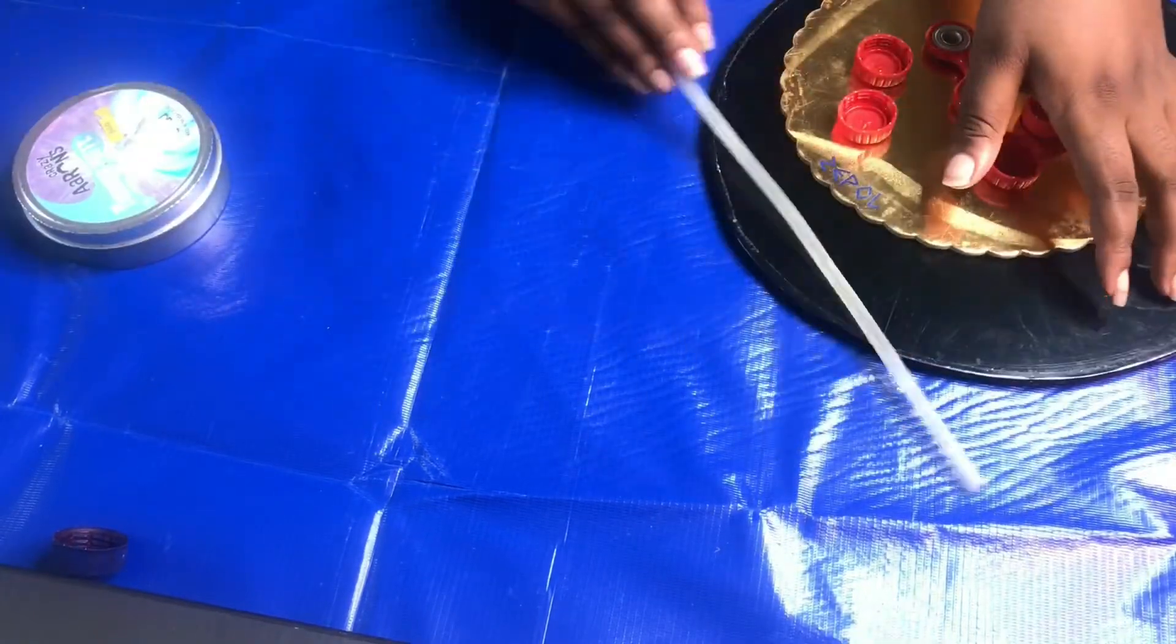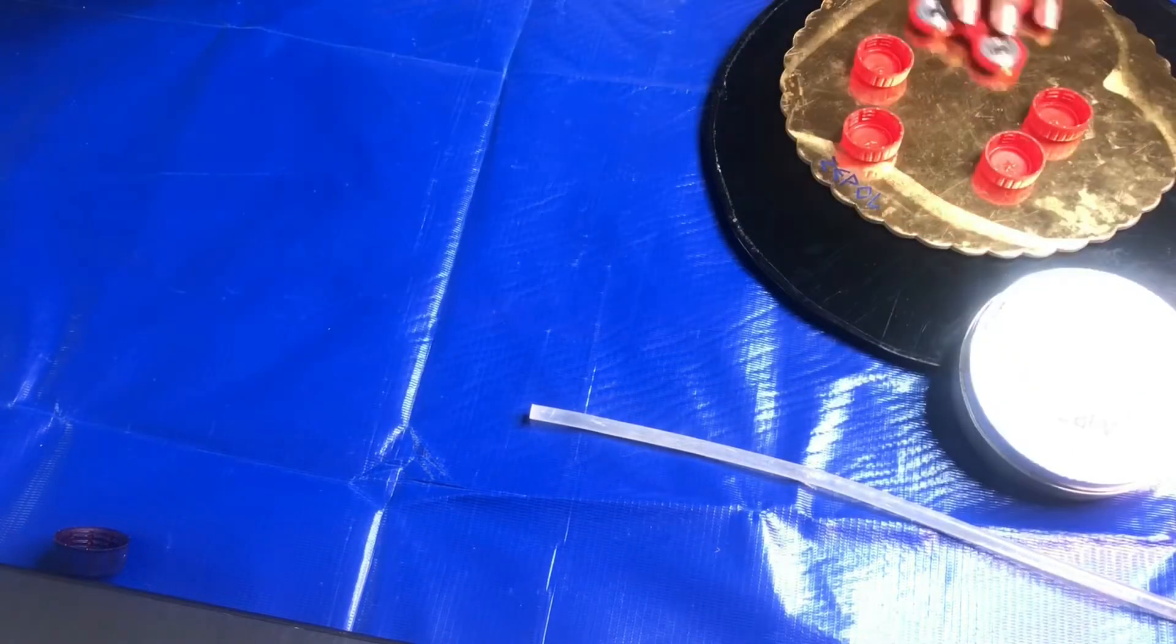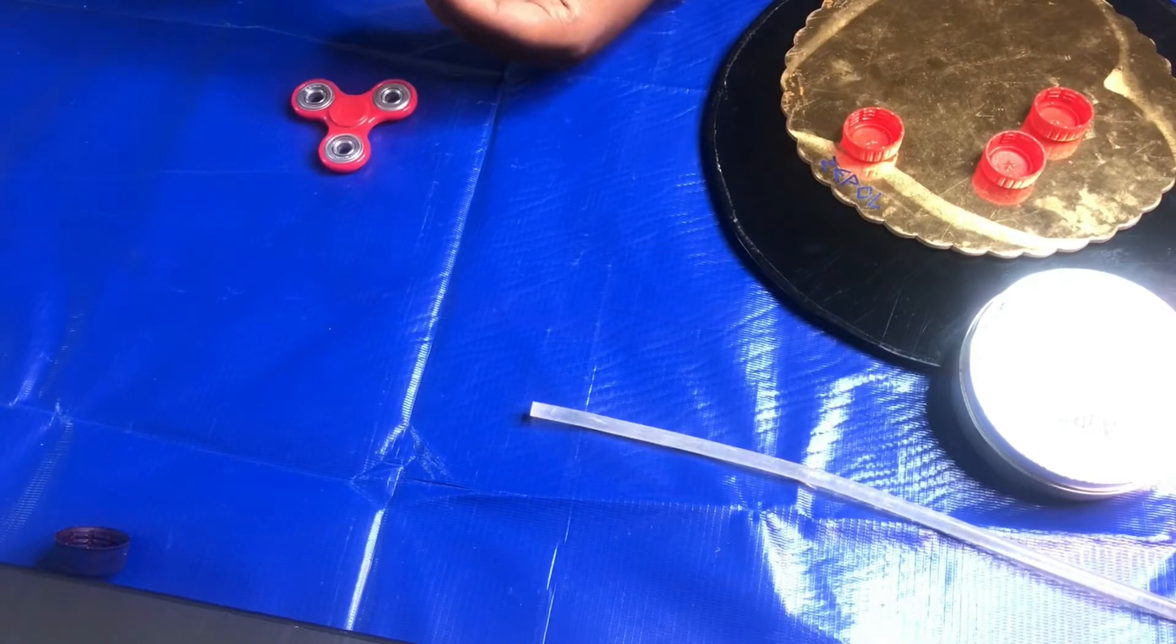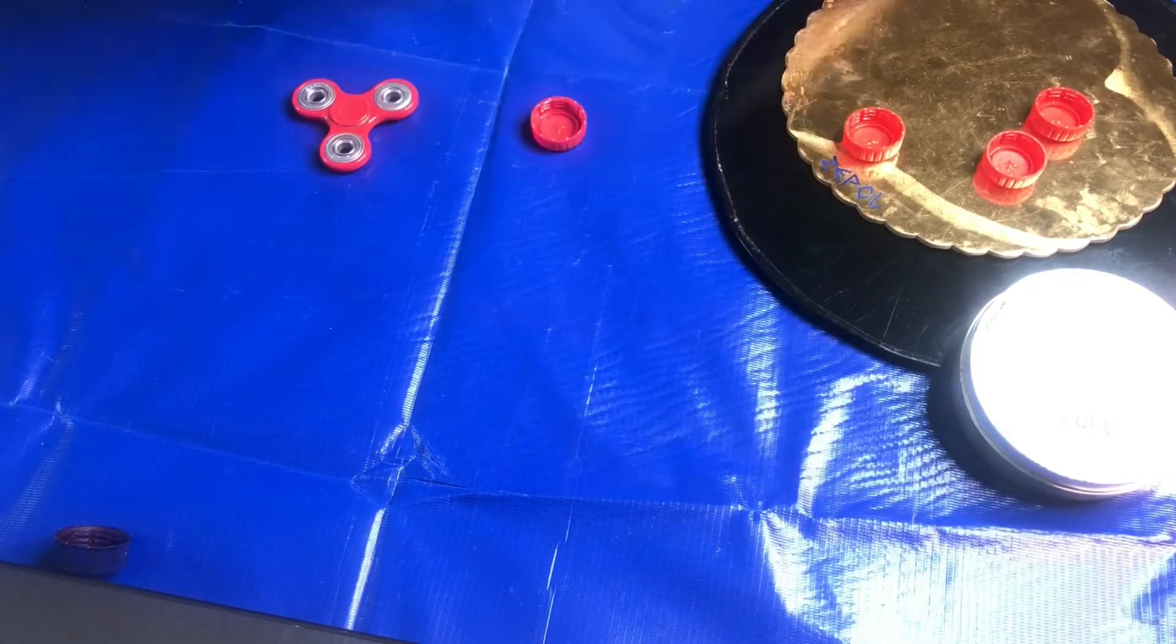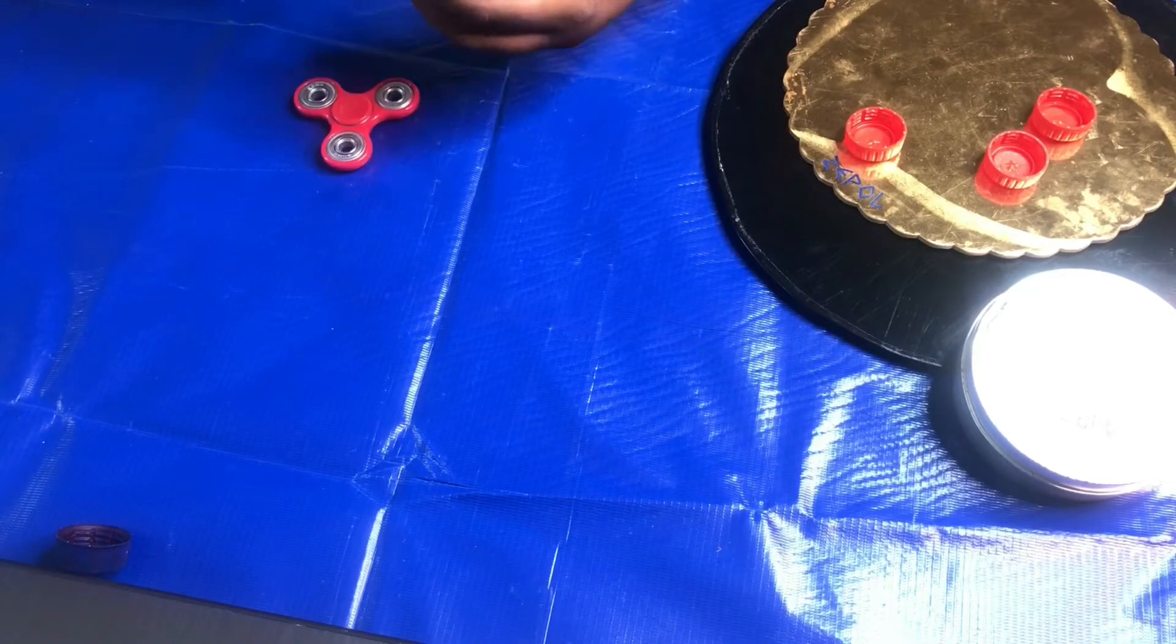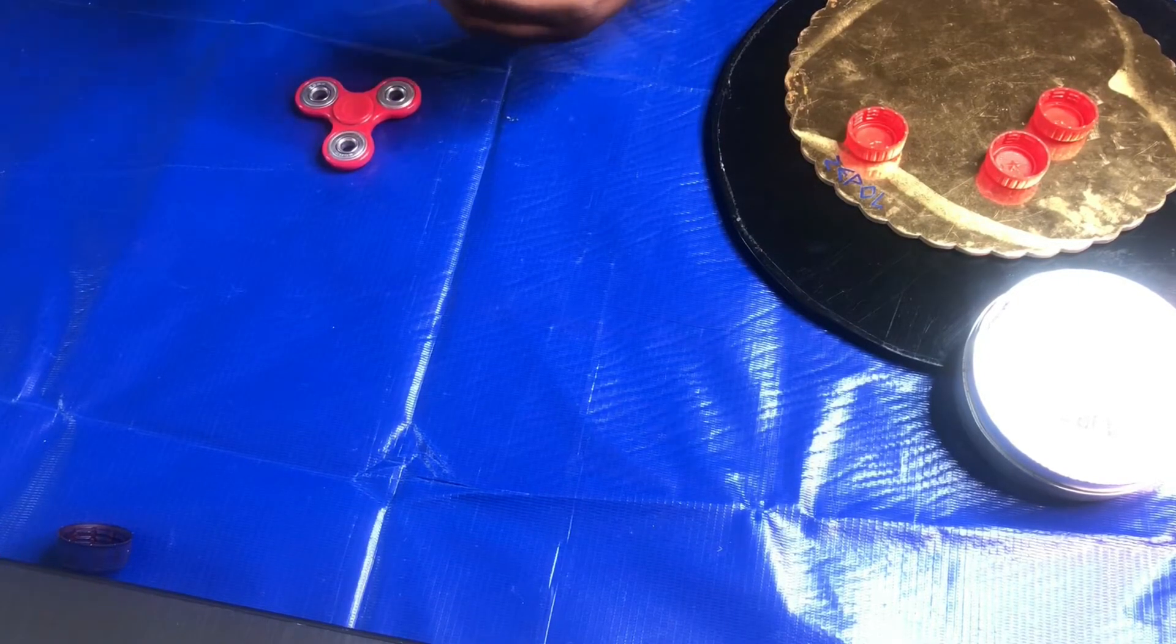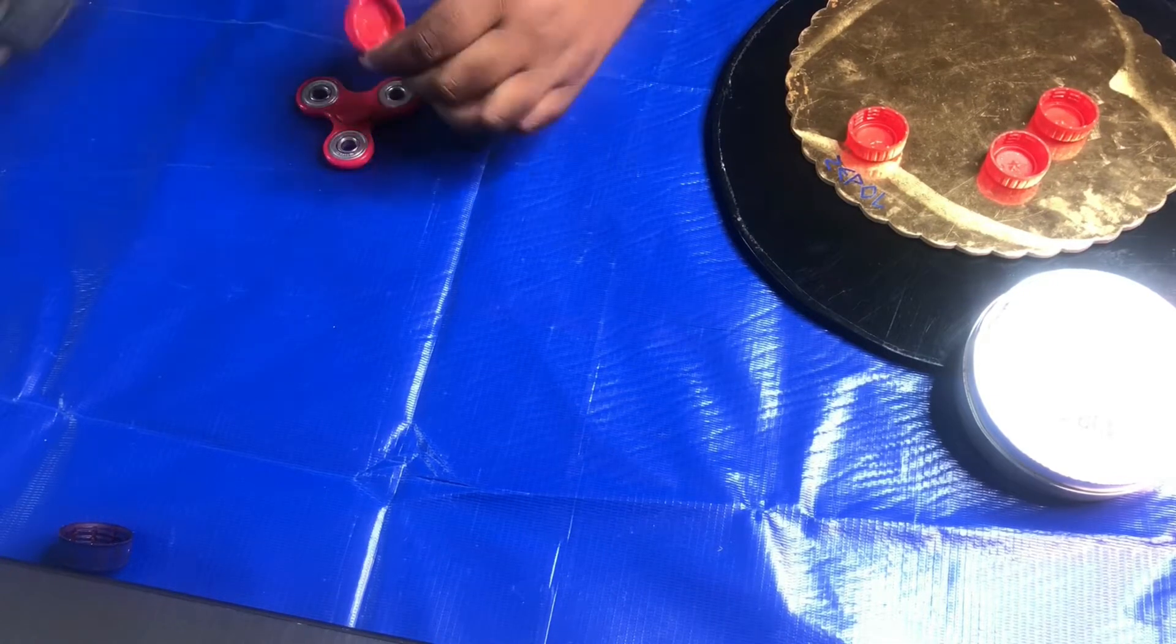So first of all, we're going to mount the bottle caps on the fidget spinner. You're going to do this so that there's a little bit of leeway, or rather space, between the fidget spinner base and the board so that it can actually spin easily.